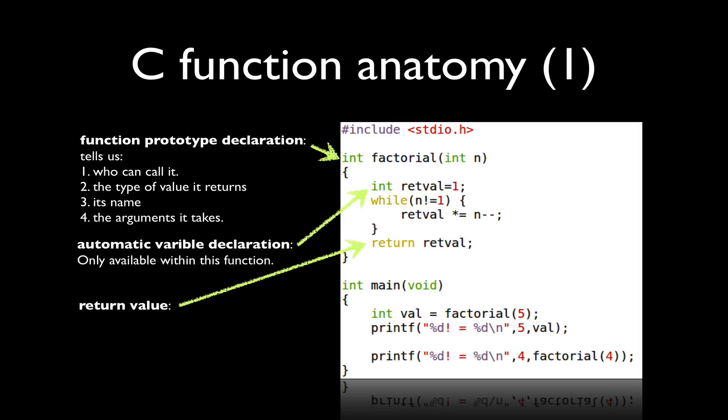Functions will return a value that has the same type as the function prototype declared. So in this case, I return retval, which is defined as an int, which matches my prototype.